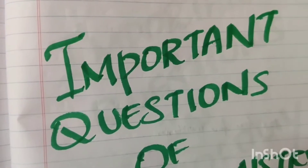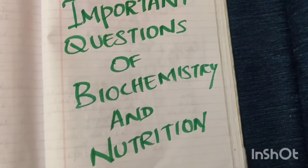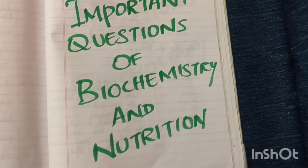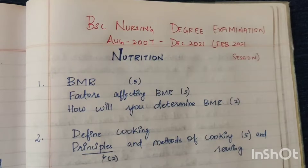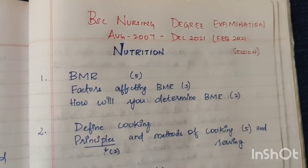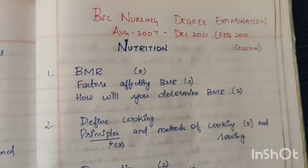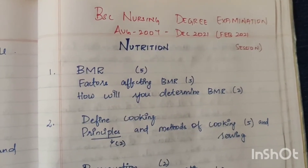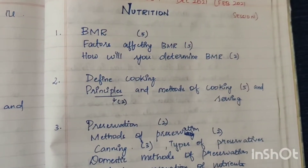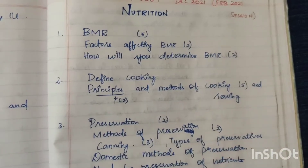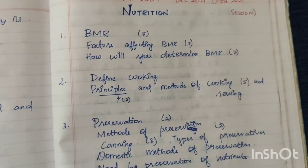Hi, we are going to talk about the important questions of biochemistry and nutrition. The important questions are complete of 15 marks and 5 marks. This covers the Dr. MGR Medical University question paper for B.Sc Nursing students, end of year August 2007 to 2021. If a topic is mentioned, there are some subtopics — maybe it comes to 15 marks or 5 marks.